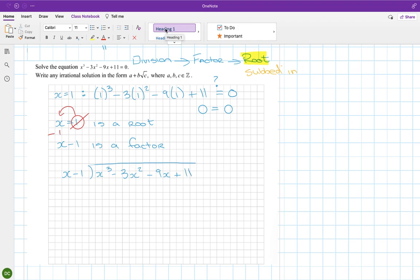I know you can do this quite well, so I'm just going to go through this quite quickly. x into x cubed goes x squared. You multiply x squared by x minus 1, and you get x cubed minus 1x squared. Change the signs, so this becomes a minus, and this becomes a plus. That cancels. So minus 3x squared plus 1x squared is minus 2x squared minus 9x. Then we go again, so x into minus 2x squared is minus 2x. Minus 2x by x is minus 2x squared, and minus 2x by minus 1 is plus 2x. Change the signs, so this becomes a plus, and this becomes a minus.